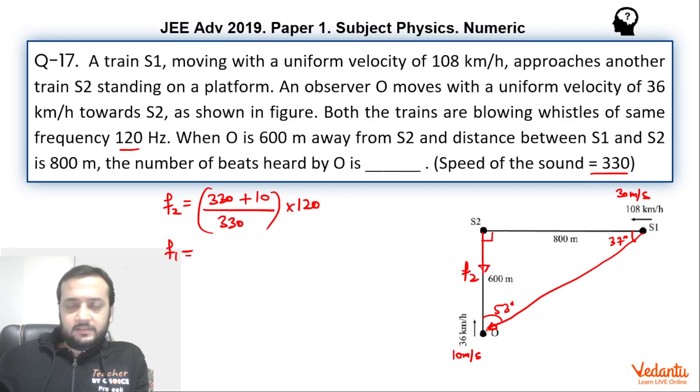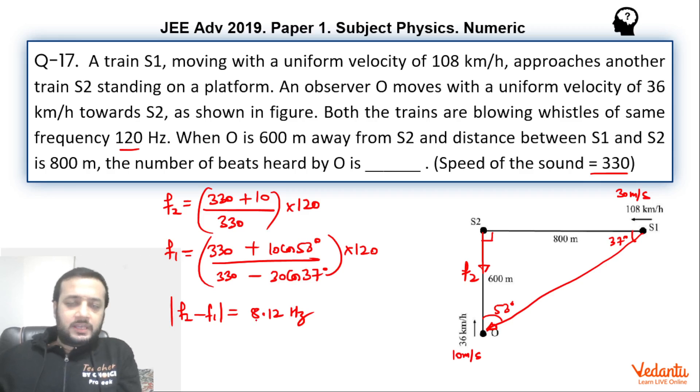So in this case, F1 is the apparent frequency which is observed by the observer. So we can say this value will be approximately equal to 330 plus velocity of sound with respect to observer. Observer is moving in this direction at 10. So we can say this will be 10 cos 53, which is 6, divided by 330 minus velocity of source. Source is 30 cos 37. This is to be multiplied by 120. So if you take the difference of these two frequencies, you're going to get around 8.12 approximately. So 8.12 Hertz you're going to get and this was the answer that IIT had given.